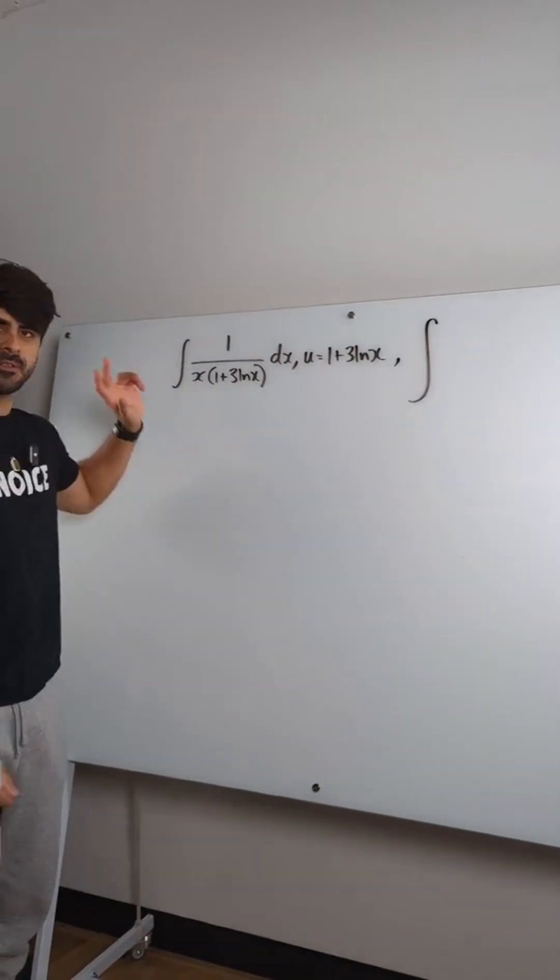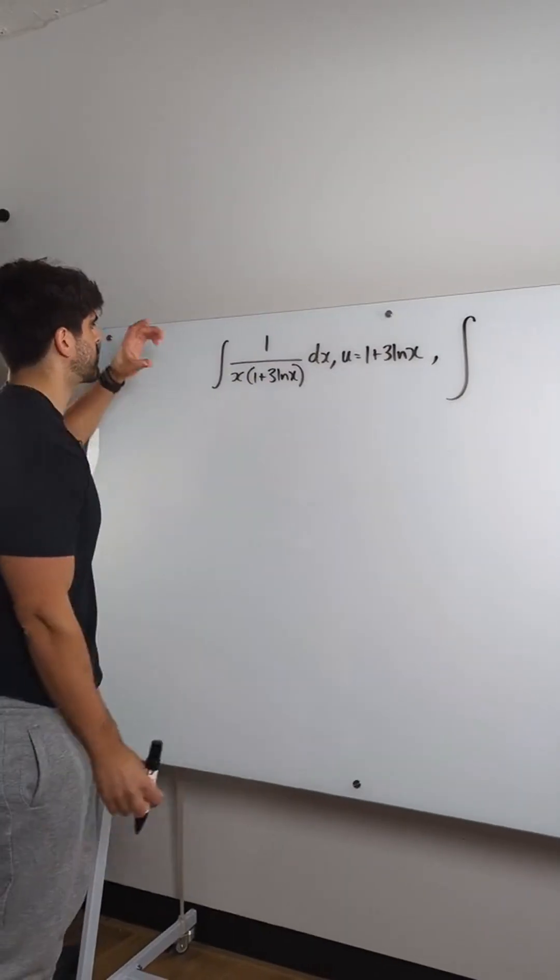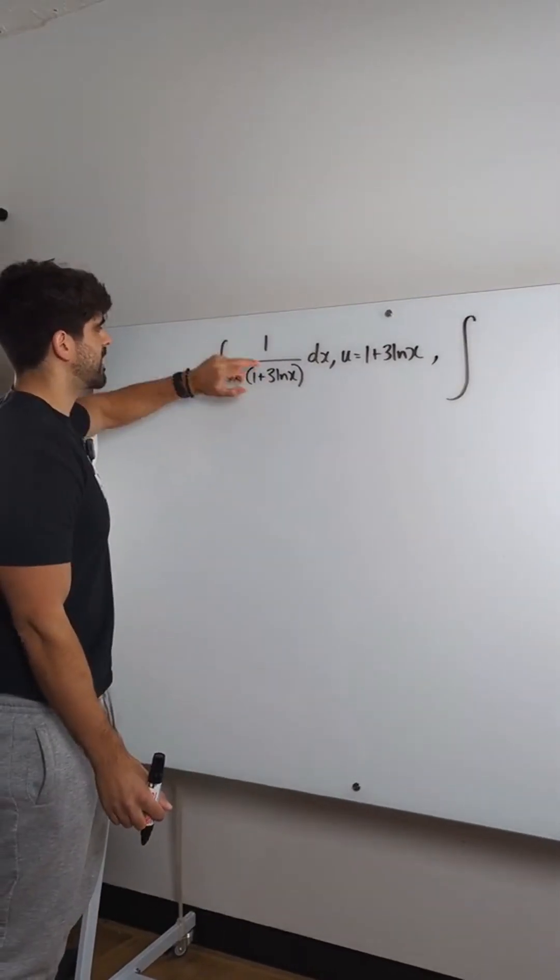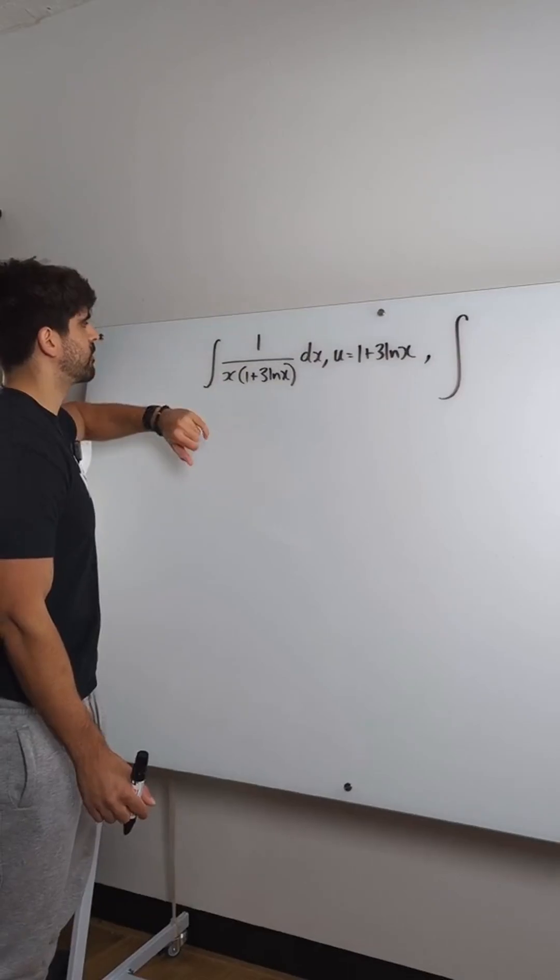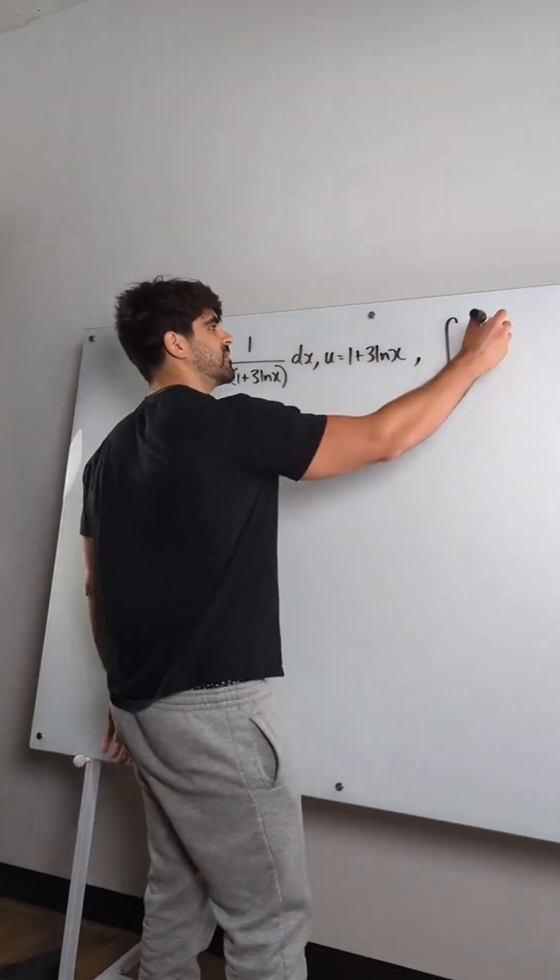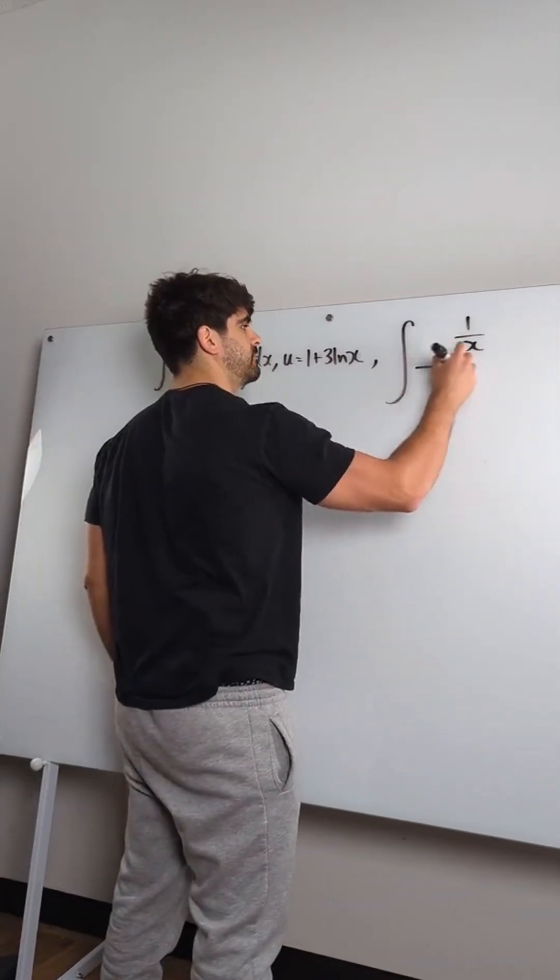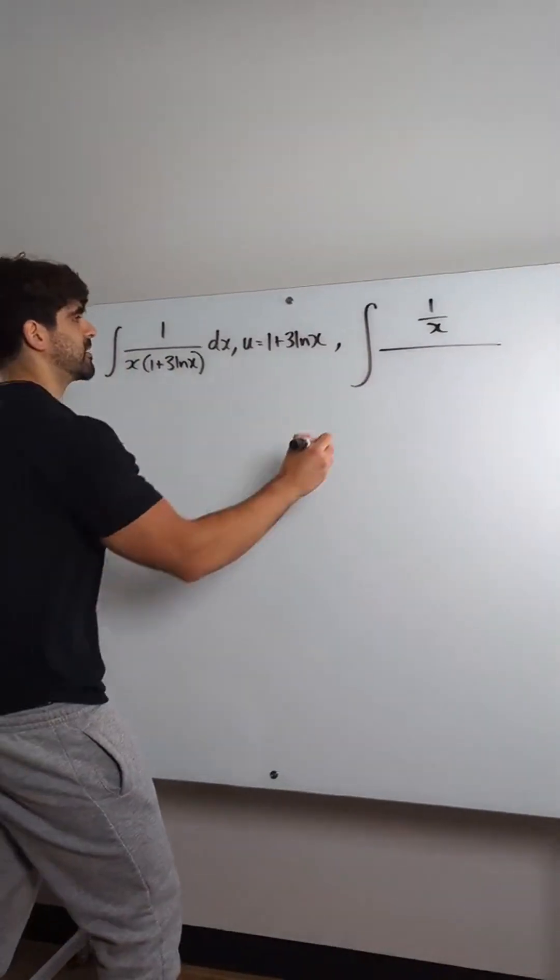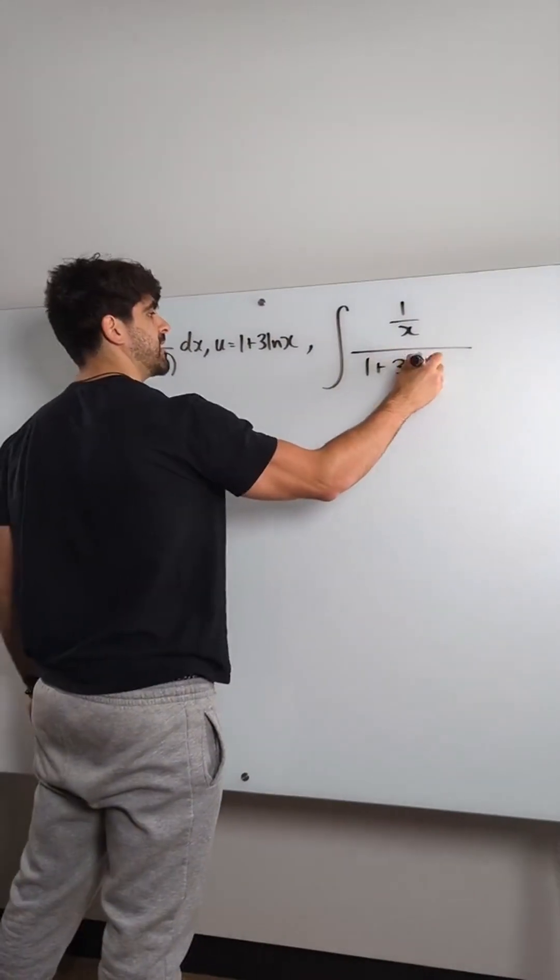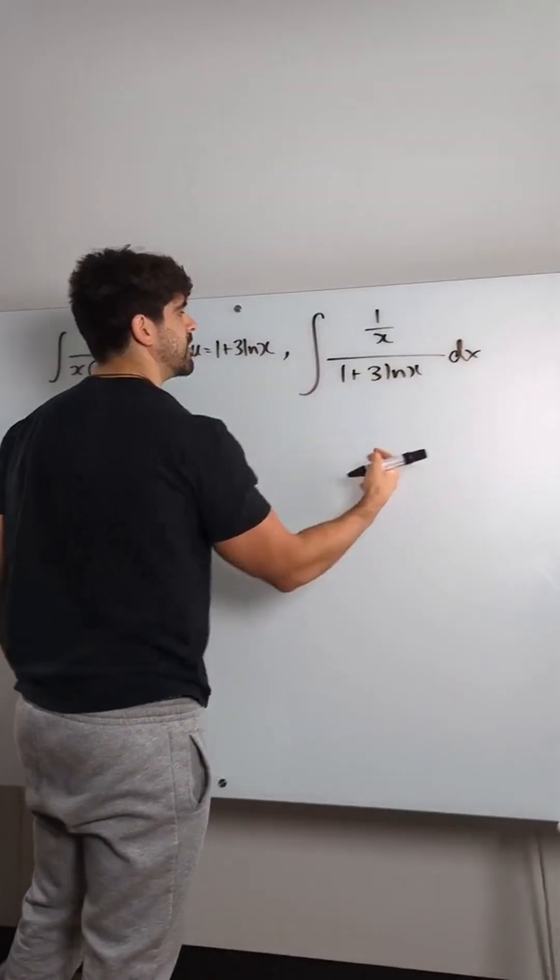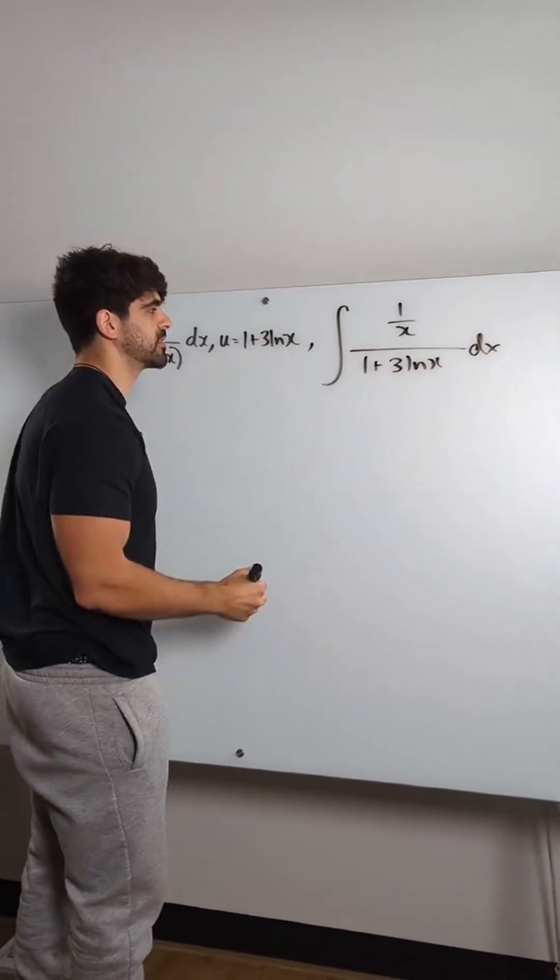This is, well, if you've seen this kind of stuff before, this is 1 over x, and I know ln x differentiates to 1 over x. If I rewrite like this, 1 over x in the numerator, 1 plus 3 ln x, what I notice is that this denominator differentiates to the numerator.